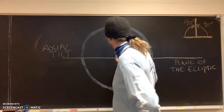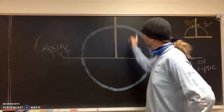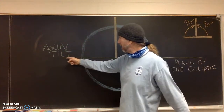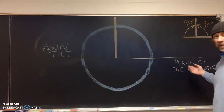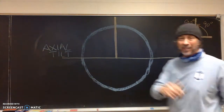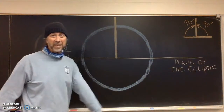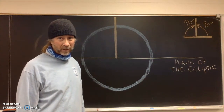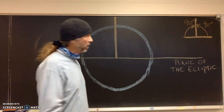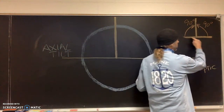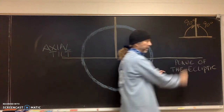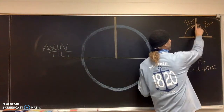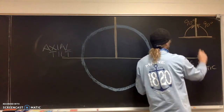If you look at this diagram I drew on the board here, the blue represents the earth. The yellow line here represents the plane of the ecliptic. A perpendicular line creates a right angle. This line right here is a line — remember, a line has 180 degrees in it. This line right here is a perpendicular line.